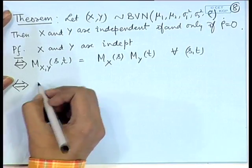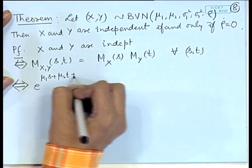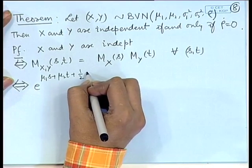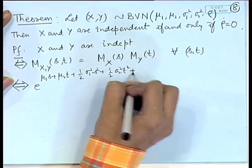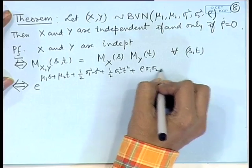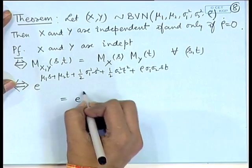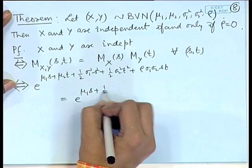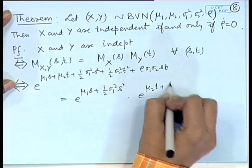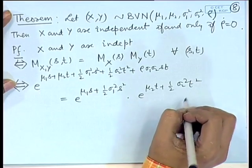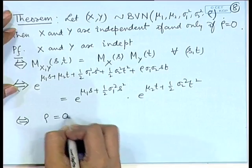Now, this is equivalent to: e to the power mu_1 s + mu_2 t + half sigma_1 squared s squared + half sigma_2 squared t squared + rho sigma_1 sigma_2 s t, equaling e to the power mu_1 s + half sigma_1 squared s squared, times e to the power mu_2 t + half sigma_2 squared t squared. So this is equivalent to the statement that rho equals 0.